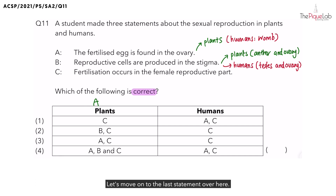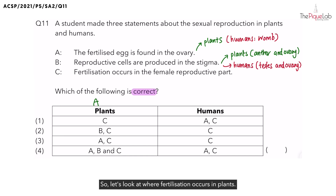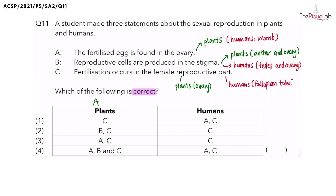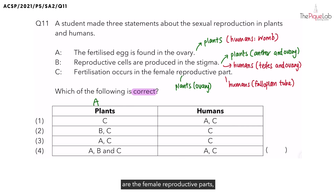Let's look at the last statement — Statement C: 'Fertilization occurs in the female reproductive part.' In plants, fertilization occurs in the ovary, and in humans, fertilization occurs in the fallopian tube. Both the ovary and the fallopian tube are female reproductive parts. Therefore, Statement C is true for both plants and humans.